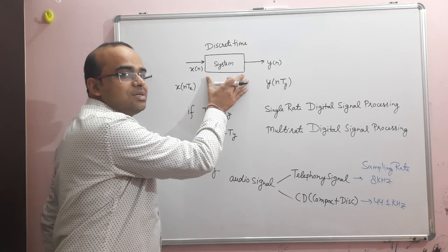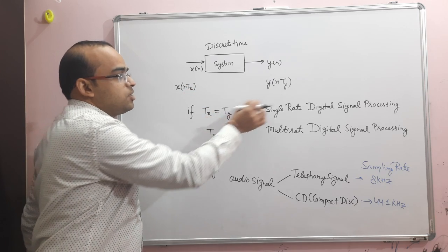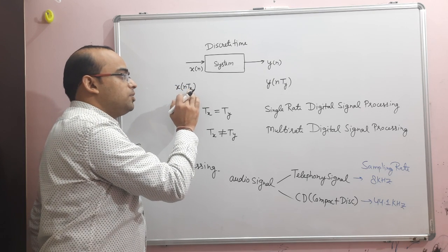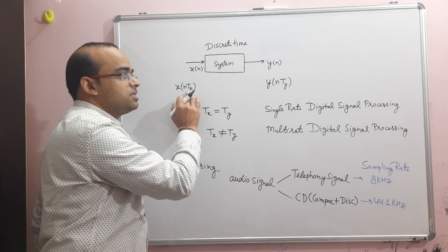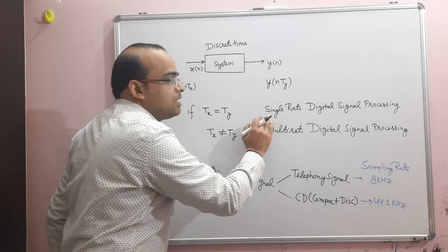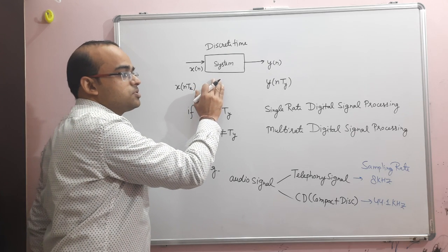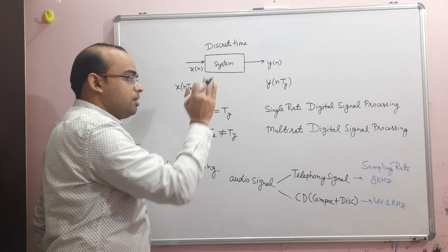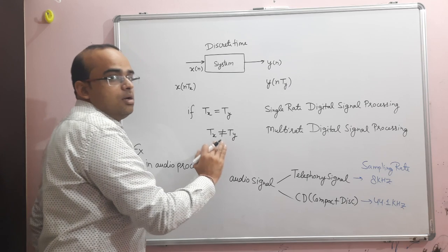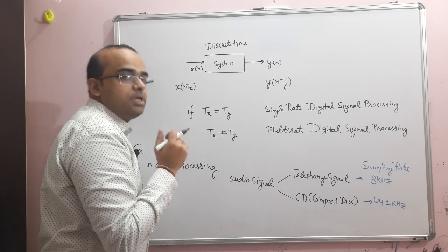In case if Tx equals Ty, means the input side sampling interval is the same as the output side, then we will say that this type of processing is single-rate digital signal processing. On the other hand, if Tx is not equal to Ty, then we will say that this system is a multi-rate system.